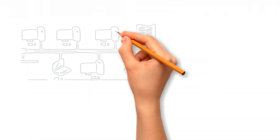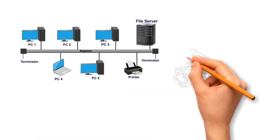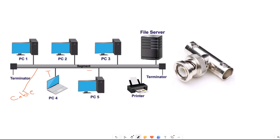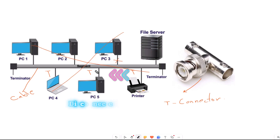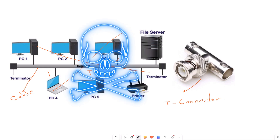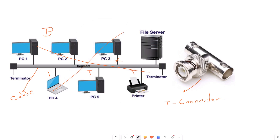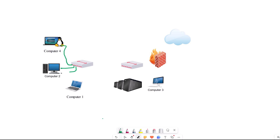In the early network infrastructure, all networking devices were connected through a cable with a T-connector, and only one device could send data at a time while others waited. Also, if one device's cable was disconnected from the network, the entire network would go down and no device would be able to send or receive data. This was known as the bus topology.